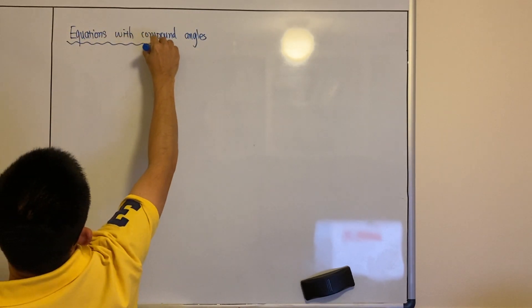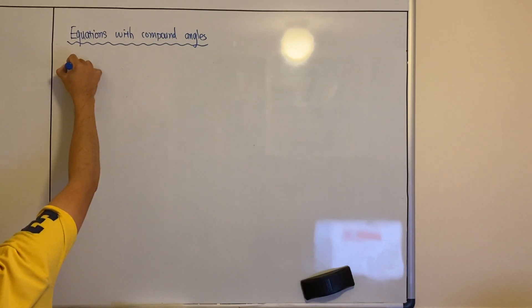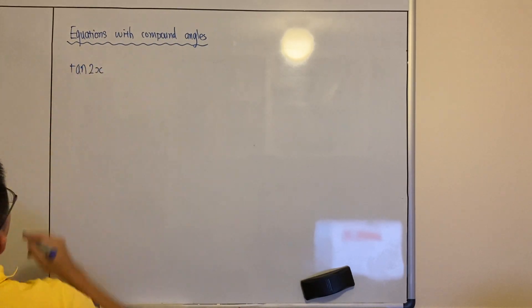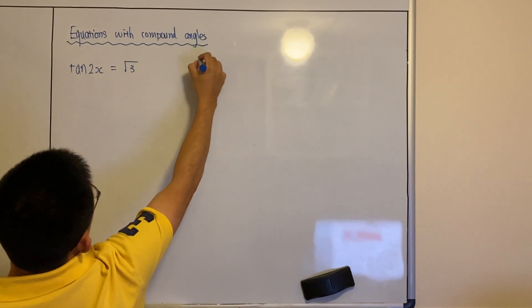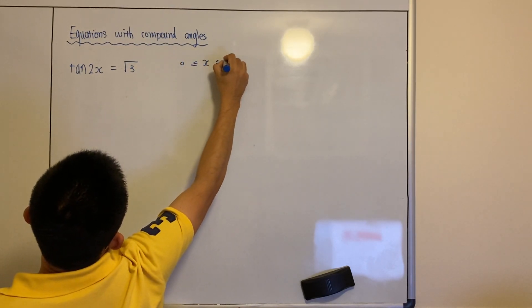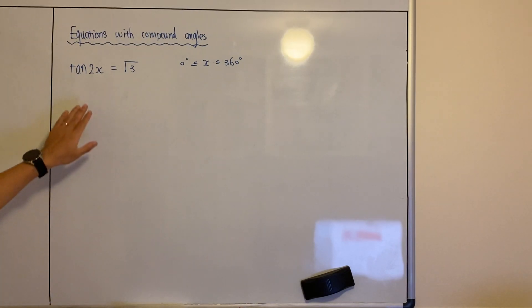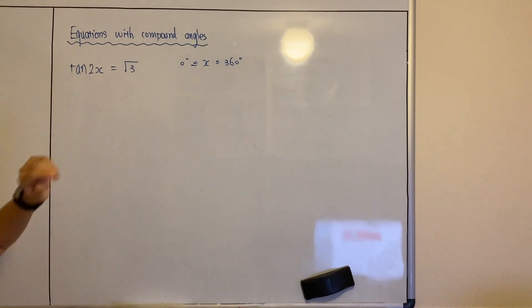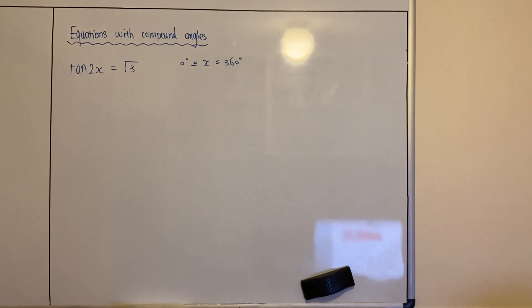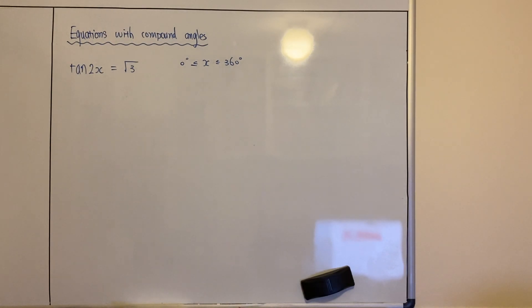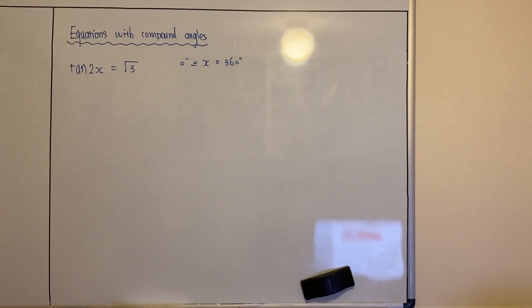What does that mean — equations with compound angles? From the previous lessons, I told everyone there are four steps to follow. The first step is to pay attention to the domain. The second step is to use your calculator or special angle table to work out the first angle. The next step is to use all stations to central to work out the second angle. And the last step is, depending on the domain, you plus or minus 360 degrees to work out the remaining angles.